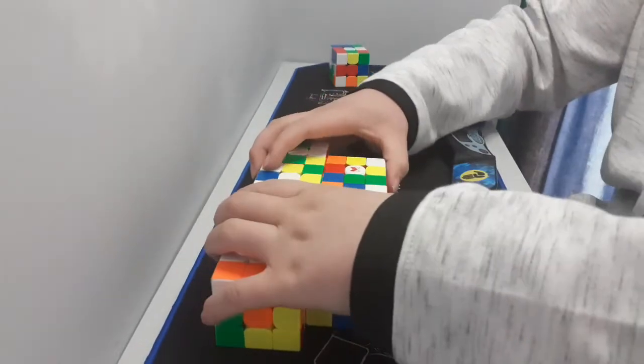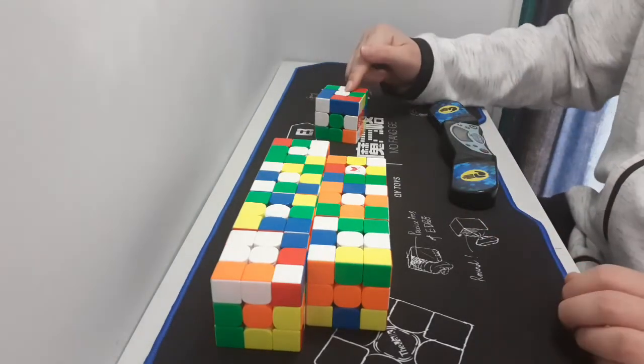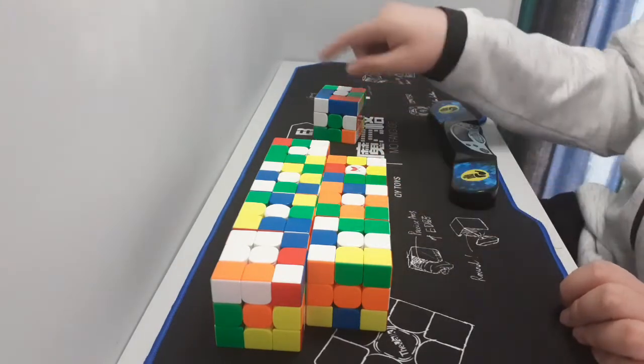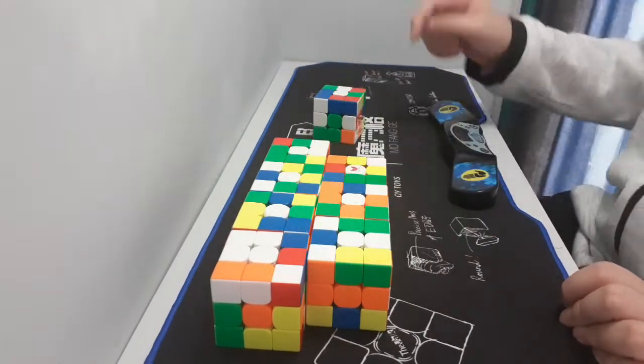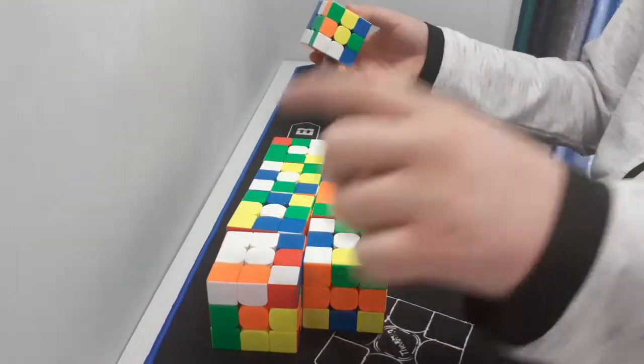So these are the cubes I'm going to solve while I'm solving this one. So the idea here is I solve the cross, then one of these, first pair, then the next one, third pair, all the way up OLL, then PLL. So I'll actually finish the main cube before I finish all of these, because it'll be PLL, then the final cube.